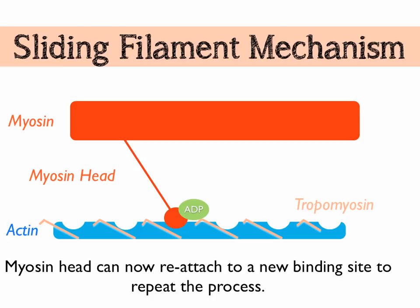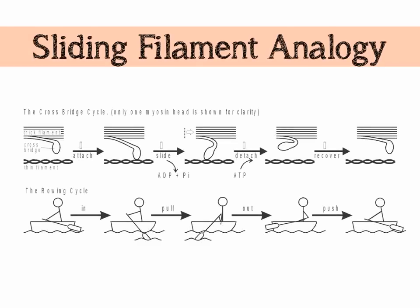So that's how it works: tropomyosin moves and reveals binding sites; myosin head binds and shifts the actin along; ADP is released; ATP binds the myosin head, which detaches, gets re-cocked, and binds in a new location to repeat. There's a nice analogy using rowing: attaching myosin to actin is putting your oars in; ratcheting the actin is pulling to move the boat forward; ATP causing detachment is pulling your oars out; and the myosin re-cocking is moving your oars back to the next position, ready to start the cycle again.